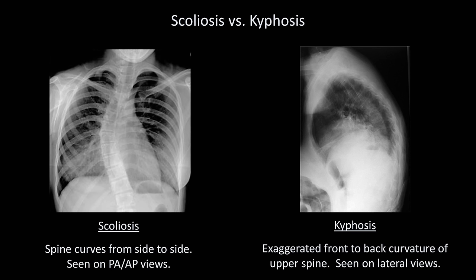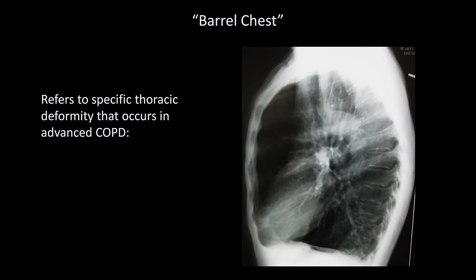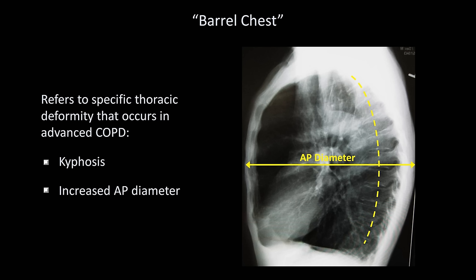A specific form of kyphosis is seen in the barrel chest deformity, which can occur in advanced COPD. This consists of the combination of kyphosis and an increased anterior-to-posterior diameter of the thorax. When the AP diameter approaches that of the side-to-side diameter, the thorax begins to resemble a wooden barrel. You can also appreciate the flattening of the diaphragms this patient has from his COPD.